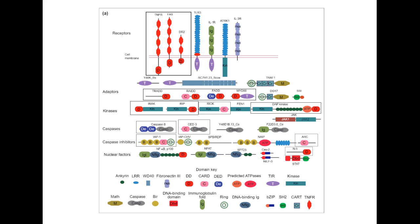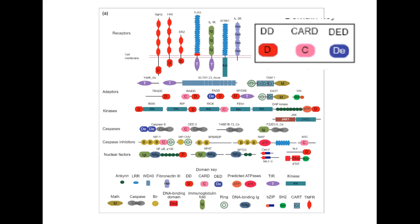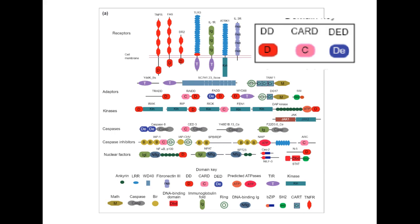These duplicated domains in caspase-8 could be found elsewhere in proteins emerging in the vertebrate immune system as mediators of cell death and inflammation signaling. One such protein was FADD, which had a region homologous to that found upstream of caspase-8. Similarly, the region upstream of the caspase in CED-3 could be found upstream of the ATPase domain in CED-4 or APAF-1. This taught us there were other domains beyond the catalytic ones.